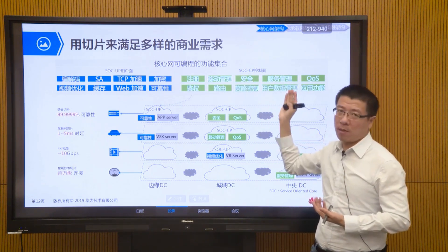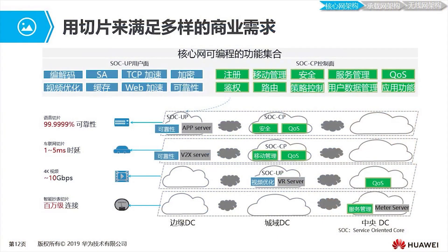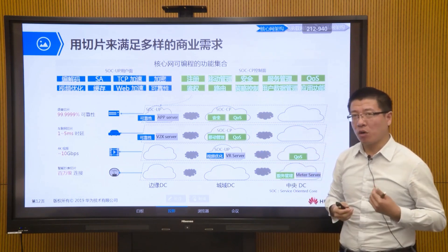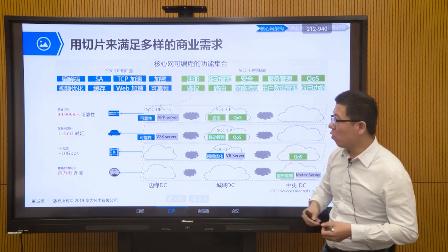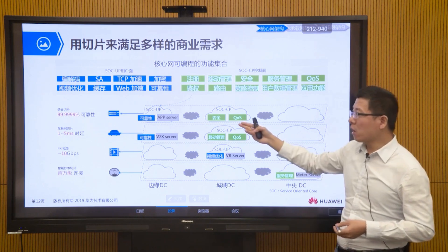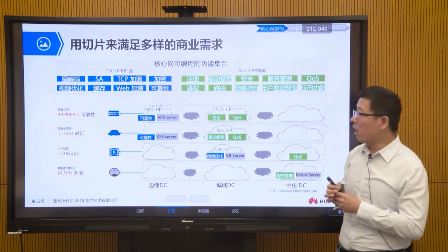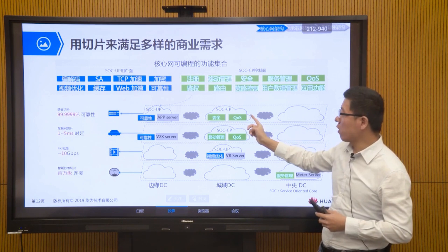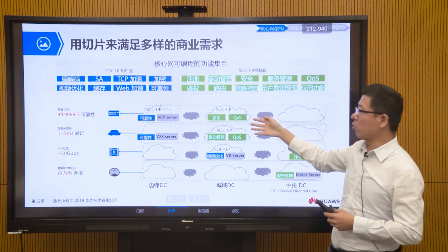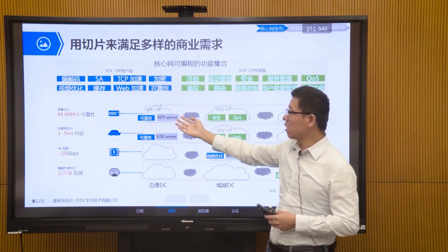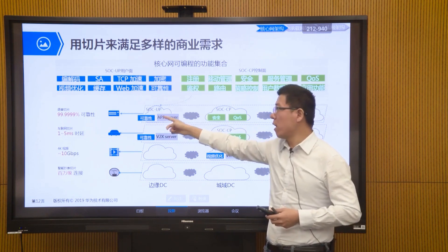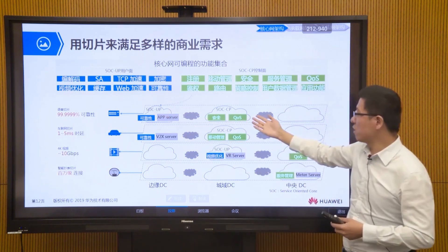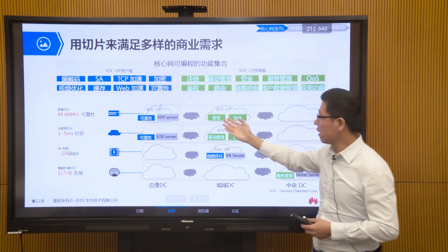The entire 5G core network is divided into two planes based on CUPS — Control and User Plane Separation technology. In each plane there are many functions that can all be orchestrated and invoked. For example, for a voice service requiring five-nines or six-nines reliability, I can design and orchestrate a dedicated slice. For the control plane I select QoS functions, security functions, and other needed functions; for the user plane I bring in reliability-related function modules.